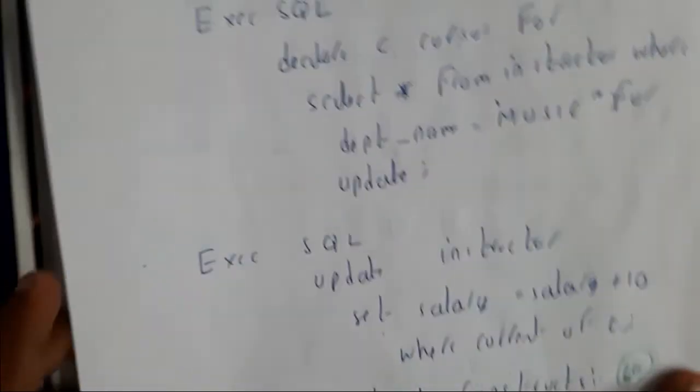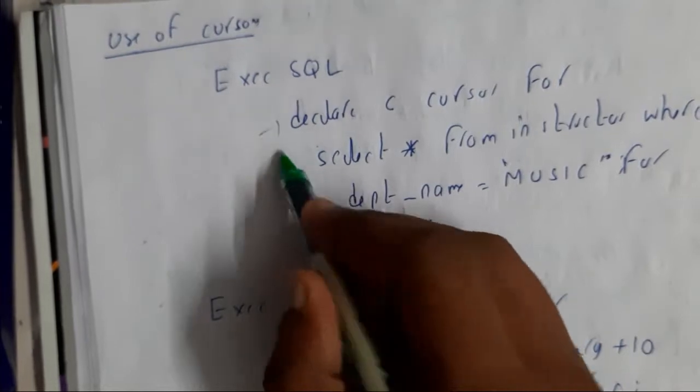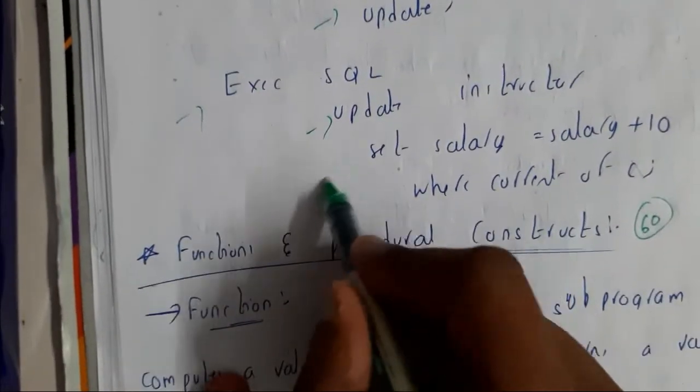Further moving on, we can use the cursor in this way also. We can declare the cursor, select operations, have the department, execute, update, set the values, and even have conditions for cursors.